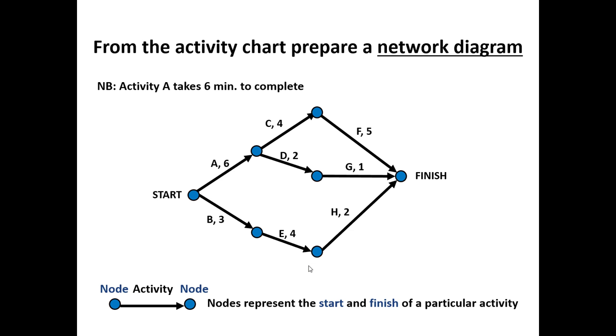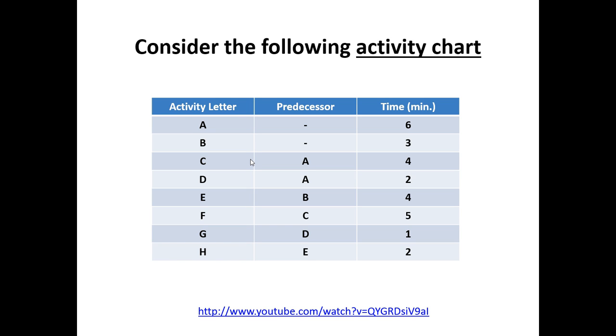Let's see what that looks like. So as we just said, you can't complete activity C until activity A has been completed. You can't commence activity D until activity A is completed. So this is a network diagram. It is a graphical representation of the activity chart.